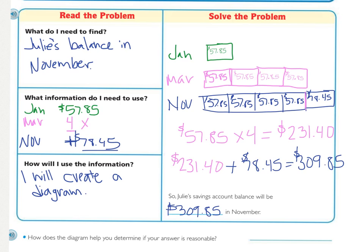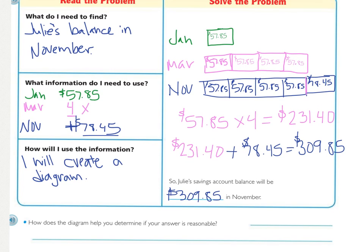Don't forget your dollar sign because that's your label. And then, just looking at your question, how your diagram helps you determine if your answer is reasonable. You can see each piece, and so you can tell if you make a mistake or how they should be in comparison to each other with amounts. We know November should be more than the others. You don't need to write a sentence for that.